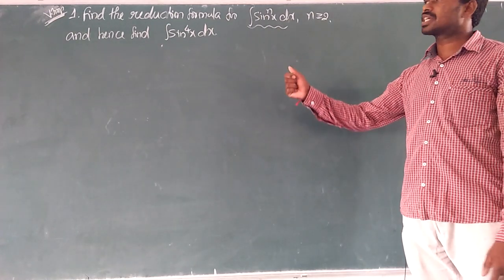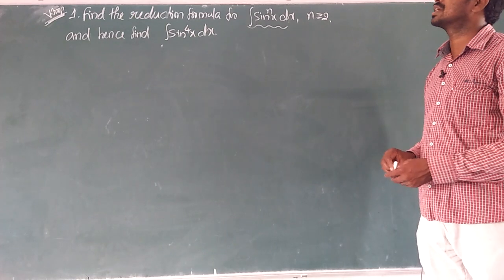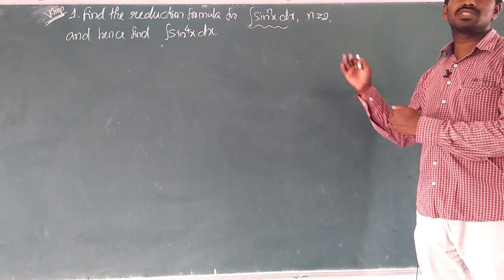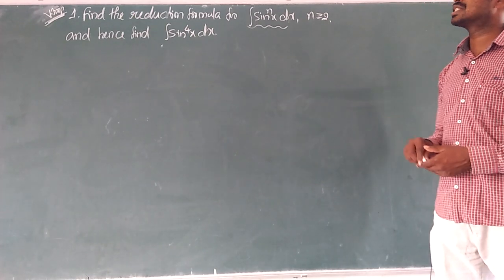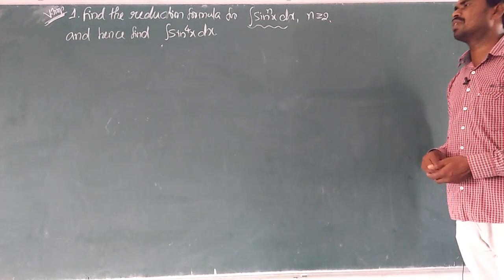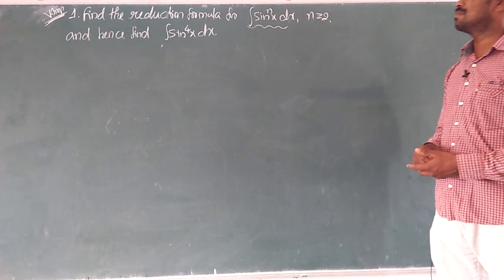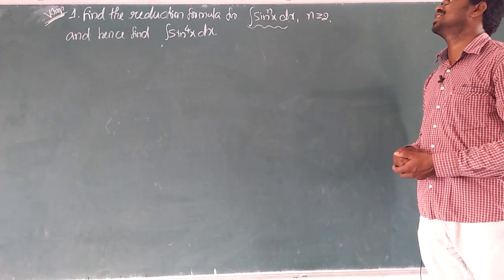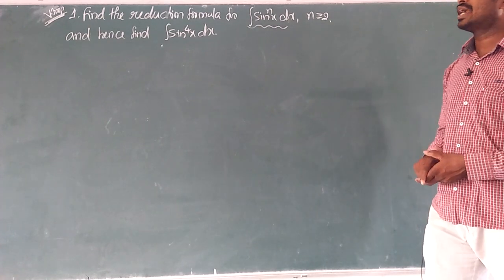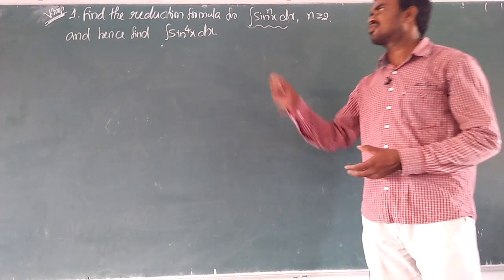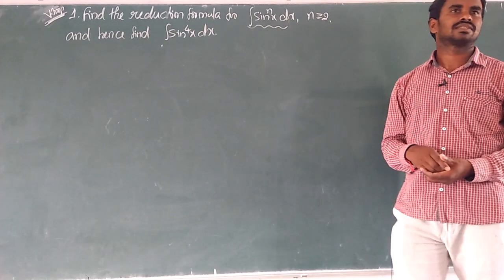For the second question we can expect from reduction formulas — that is compulsory. So we have six questions. The first one is: find the reduction formula for integration of sin^n(x) dx, where n is greater than or equal to 2, and hence find the integration of sin^4(x) dx.